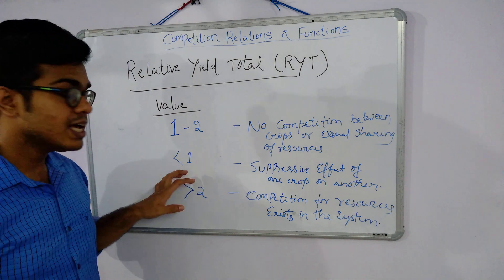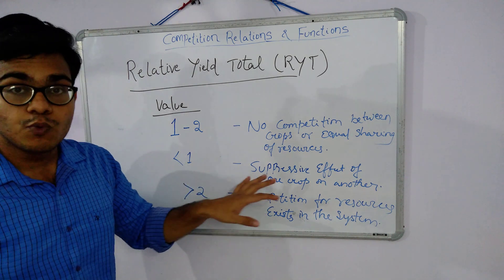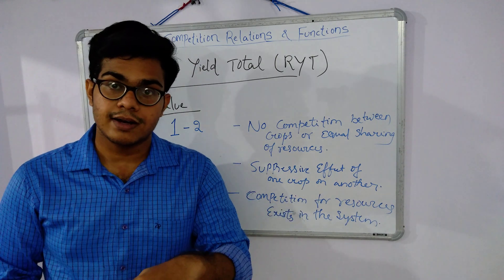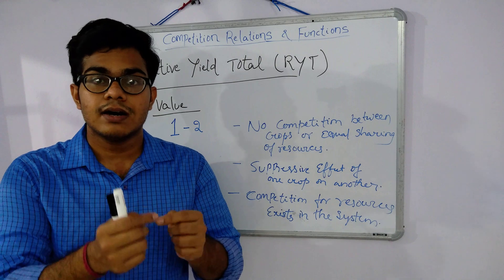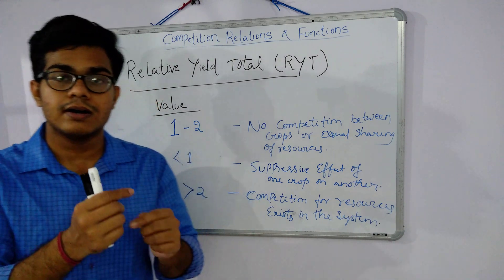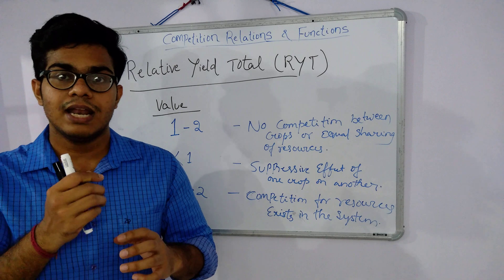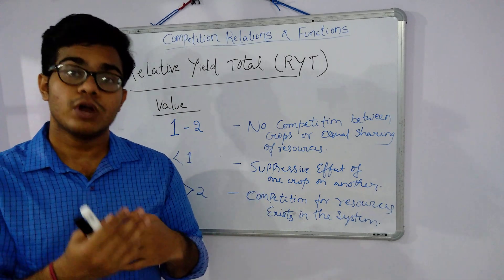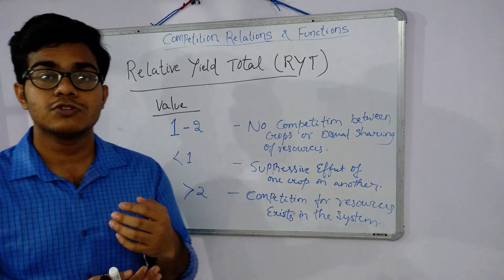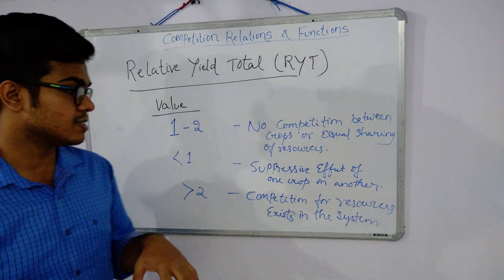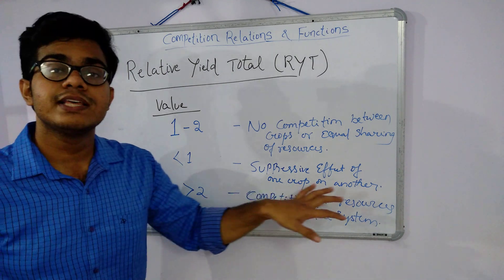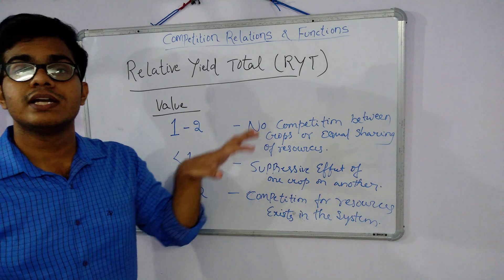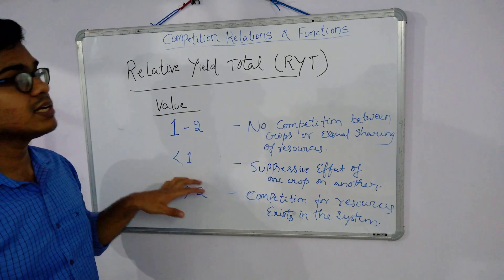If we get a value less than 1, then we can say that there is some suppressive effect of one crop on the other, or there is some lag between the resource intake of the crops — one crop can uptake more nutrients and resources available in the farming system. We can say that allelopathy is a suppressive effect when we get an RYT value less than 1.